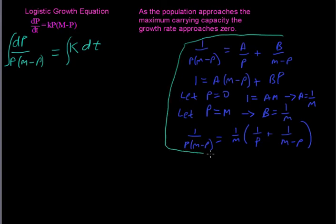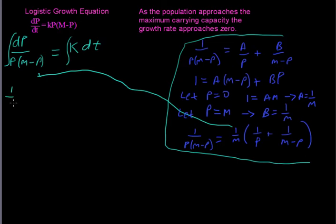And you can see that this is the integral over here that we need to redo. So I'm going to put m on the outside. So 1 over m integral of 1 over p minus 1 over m minus p. Sorry for the slanted fraction bars there. dp equals integral of k dt.